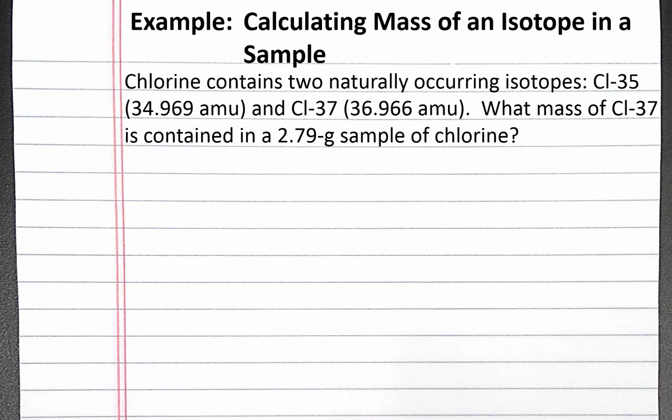To solve this problem, we'll need to calculate the abundance of chlorine-37, because this will tell us what percent by mass of the chlorine sample is chlorine-37. To do this, we'll use the equation for atomic mass. The atomic mass of chlorine is the sum of each naturally occurring isotope of chlorine times the mass of that isotope.